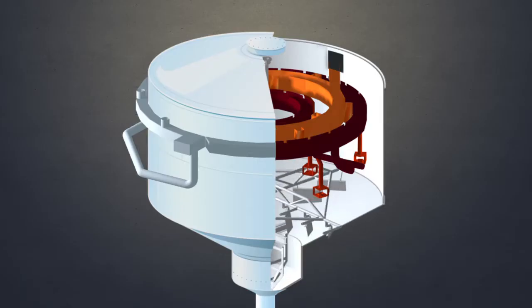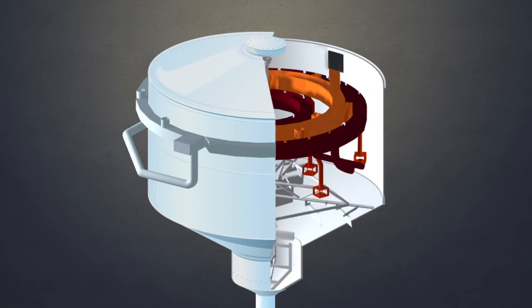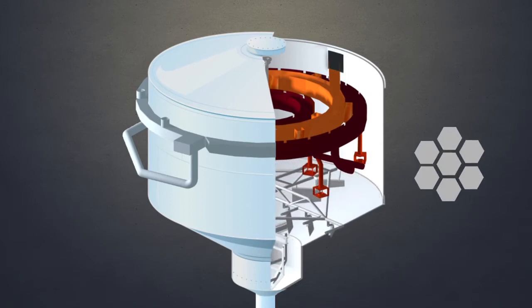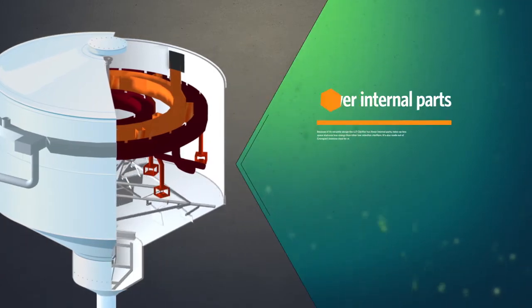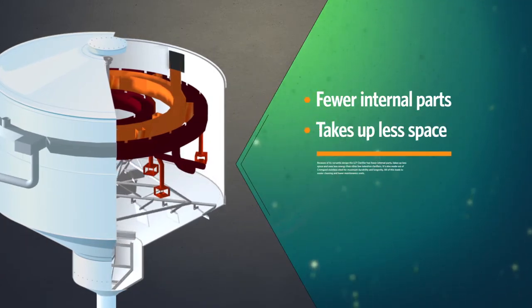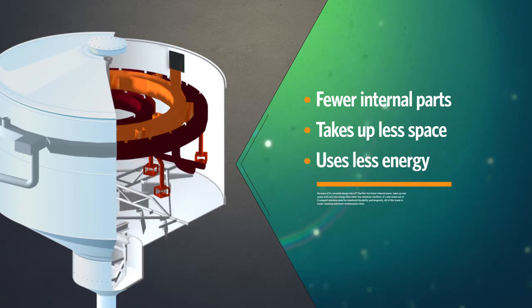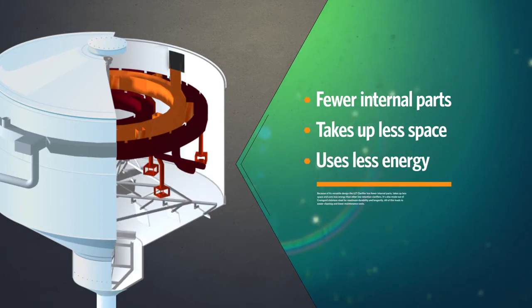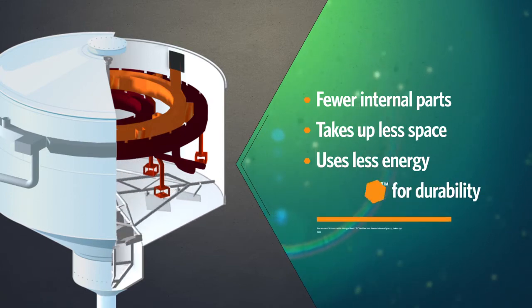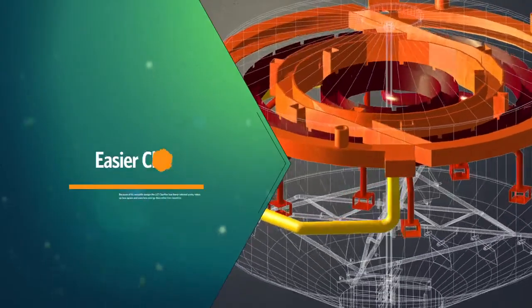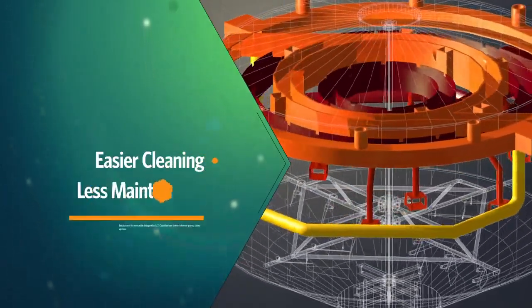You'll also benefit from the Crompion LLT clarifier's innovative design. Because of its versatile design, the LLT clarifier has fewer internal parts, takes up less space, and uses less energy than other clarifiers. It's also made out of ChromGuard stainless steel for maximum durability and longevity. All of this leads to easier cleaning and lower maintenance costs.